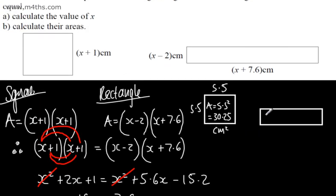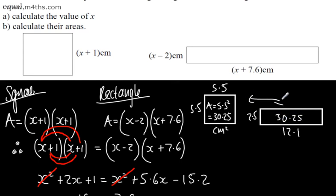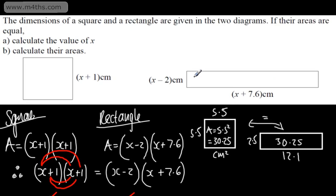The rectangle should give 30.25 as well. With x equal to 4.5, x minus 2 is 2.5 and x plus 7.6 gives 12.1. So 2.5 times 12.1 gives 30.25, confirming the areas are equal. If the question asked for the perimeter of each shape, you would just substitute x in and add the sides up.